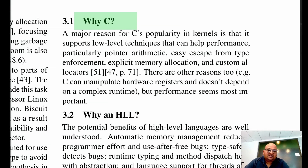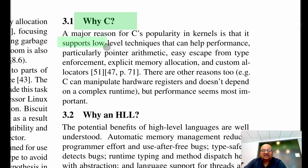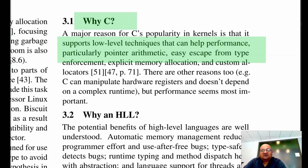C is definitely the default and first choice when it comes to writing operating system kernels. Every major kernel in existence today is written in C, whether it's Linux or Mac OS or the Windows kernel. A major reason is that C supports low-level techniques like manipulating memory and registers and pointer arithmetic, which can really help performance. So the bottom-line reason that C is so popular for kernels is basically performance.